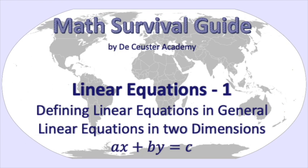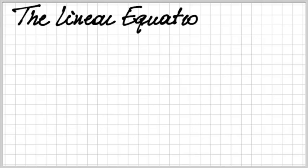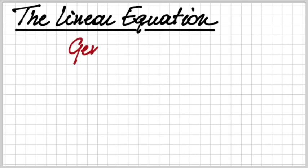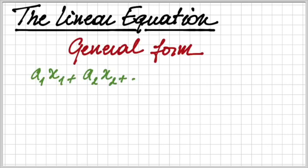So let's have a look at the different elements that we are going to consider. First of all, we have to look at the linear equation in its general form. The general form is written as a1x1 plus a2x2, and so on, a index i, x index i, until we reach the final element a_n x_n, and the sum is equal to c. So this is the general form of a linear equation.